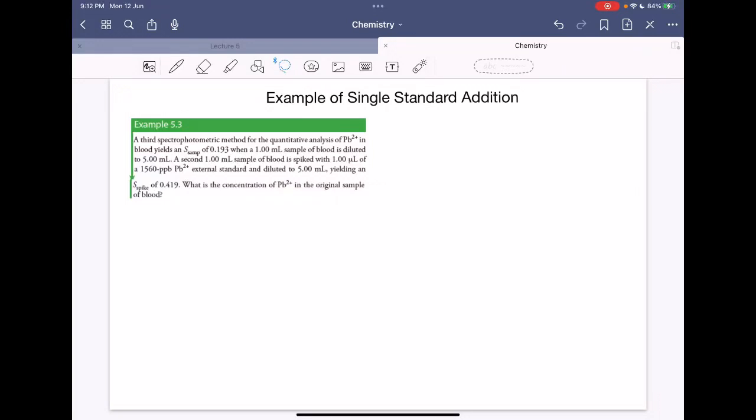So here is a problem regarding single standard addition. A spectrophotometric method for the quantitative analysis of PP2 plus in blood gives an absorbance sample of 0.193 when a one millimeter sample of blood is diluted to five millimeters.